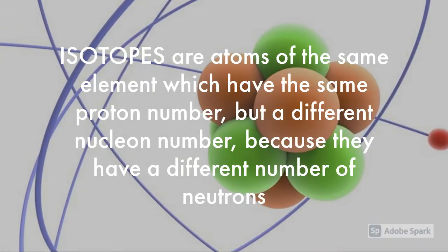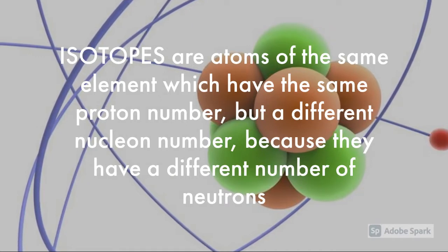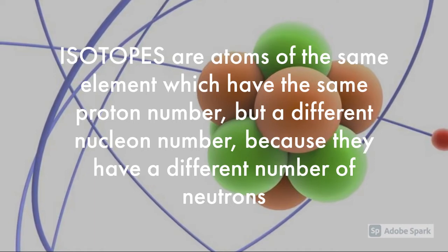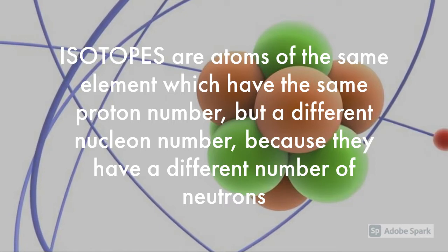Thinking about those three atoms of carbon, we've got a new definition that we need to learn and memorize. Isotopes are atoms of the same element which have the same proton number, but a different nucleon number between them, because they have a different number of neutrons.